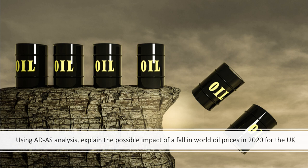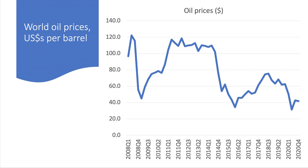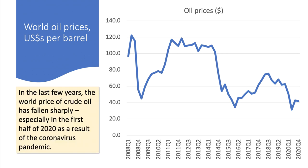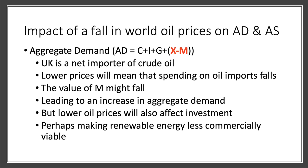Now using ADAS analysis, explain the possible impact of a fall in the world price of oil in the UK in 2020. Since 2008, the price of oil has been volatile — for much of the last decade it was at or above $100 a barrel — but in the last year or so the price fell quite substantially, particularly during 2020 as a result of the coronavirus pandemic, when derived demand for oil from transport and industry fell away very sharply.